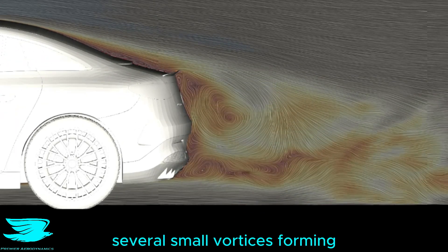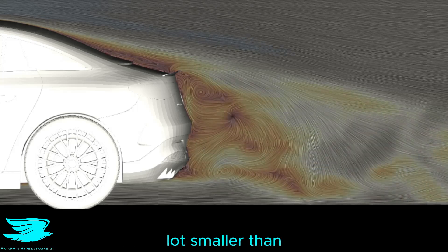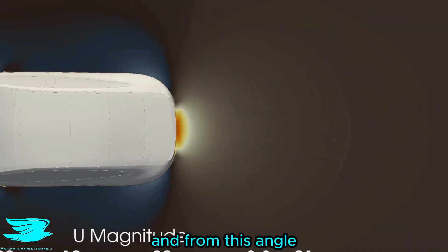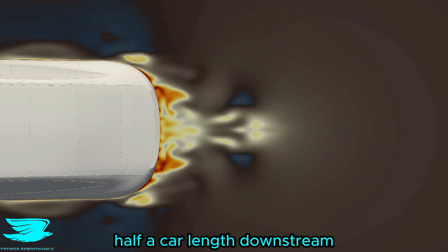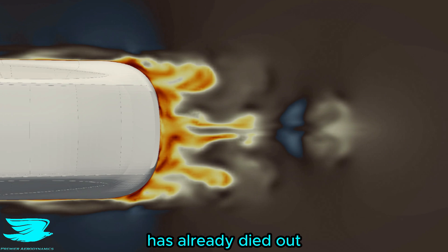At the back, these lines show several small vortices forming, and they are a lot smaller than what you find on most cars. And from this angle, we get a good appreciation of just how small the wake is, because it's literally half a car length downstream and the wake has already died out. That's impressive.